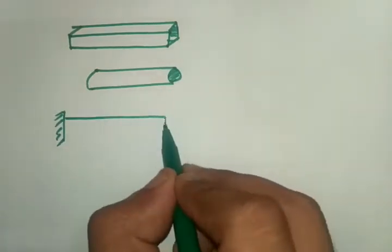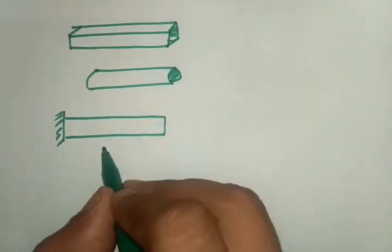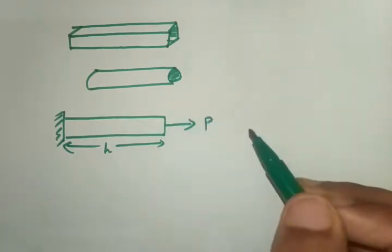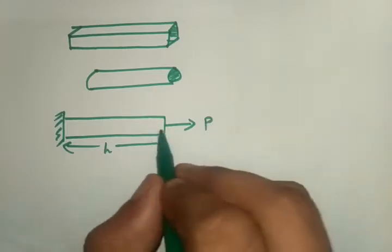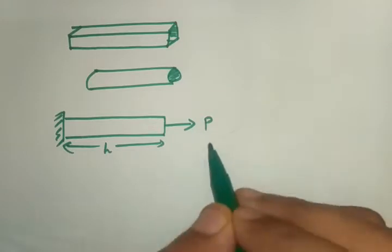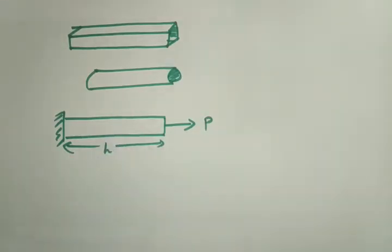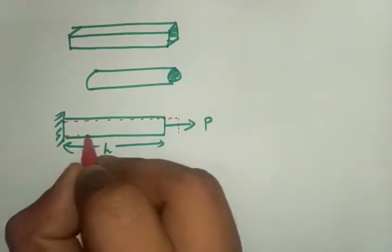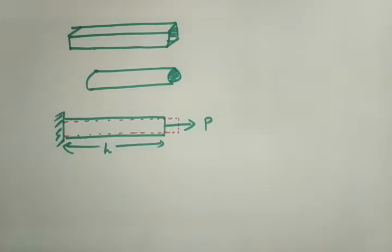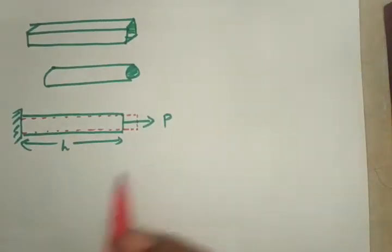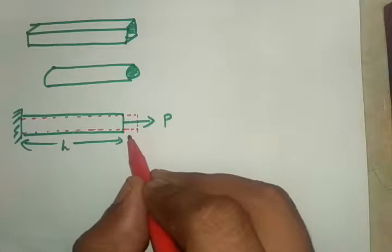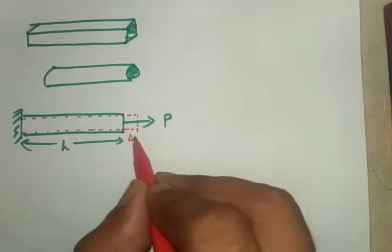This is a prismatic bar having a total length of L, applied by a force P. When P is applied on a prismatic bar, there will be elongation in the member — somewhat like this. The force P is not an impact force; P is applied gradually, and the elongation is delta.